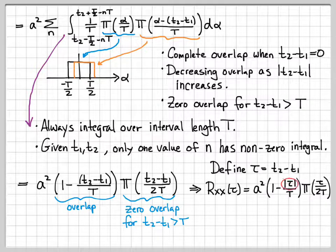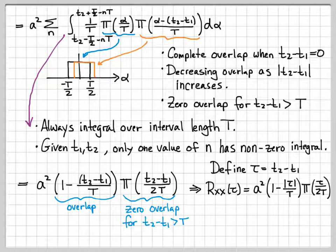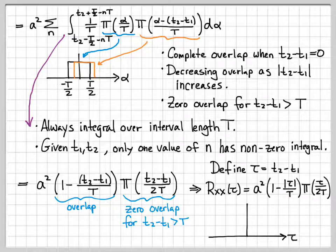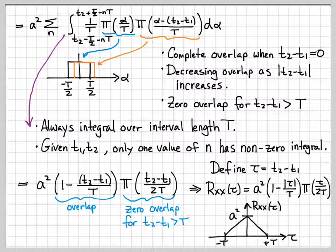I suddenly introduced the absolute value sign here. Up in my reasoning, I only thought about the shift to the right. If you do the same reasoning with a shift to the left, you get basically the exact same answer. You can combine those answers by using the absolute value function. So we end up with an autocorrelation function that looks like a triangle: its peak value is a squared, it linearly decreases in either direction as tau gets larger, and once tau is greater than capital T, the autocorrelation function goes to zero.